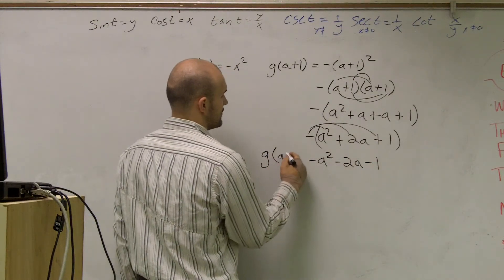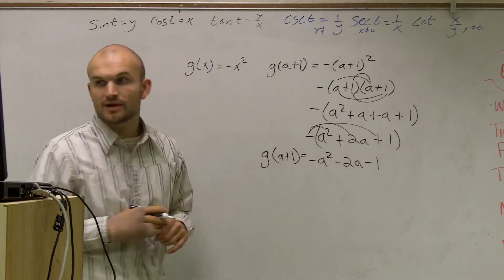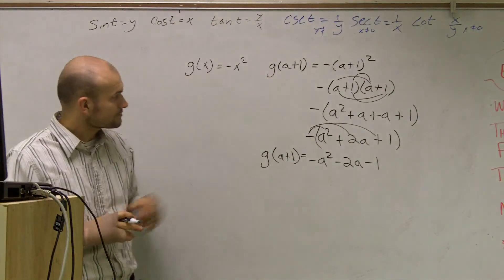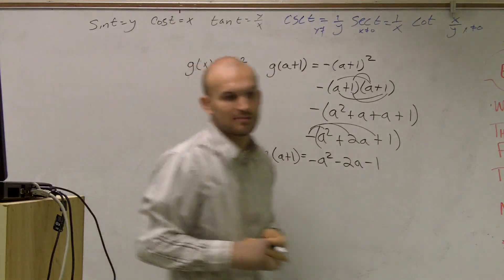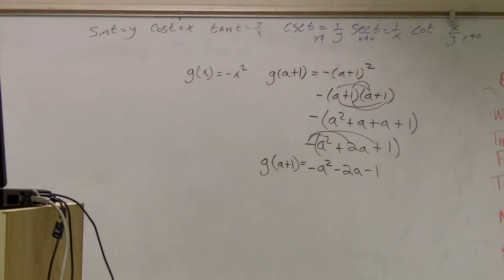So g(a+1) = -a² - 2a - 1. And that's how you evaluate a function when you have g(a+1).